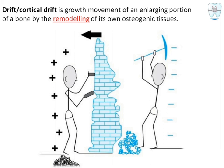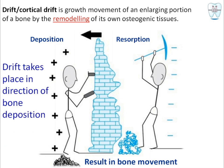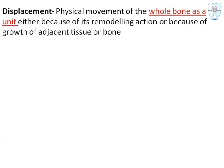This is a pictorial representation of drift. See the wall in the center — that represents bone. On one side there is deposition of bone, whereas on the other side there is resorption. Where resorption occurs, the wall decreases; where deposition occurs, the wall increases. This results in movement of the wall in the direction of deposition. So drift takes place in the direction of deposition of bone.